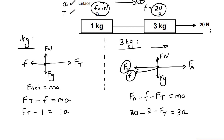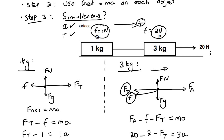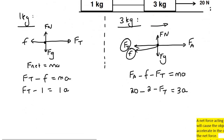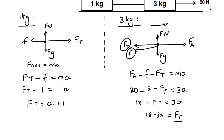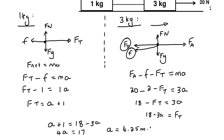Step three is the simultaneous equation to find a and T. We get F_T alone for both equations. From the first: F_T equals a plus 1. From the second: 18 minus F_T equals 3a, so F_T equals 18 minus 3a. Setting them equal: a plus 1 equals 18 minus 3a. Taking the a's to the left gives 4a equals 17, so a equals 4.25 meters per second squared.